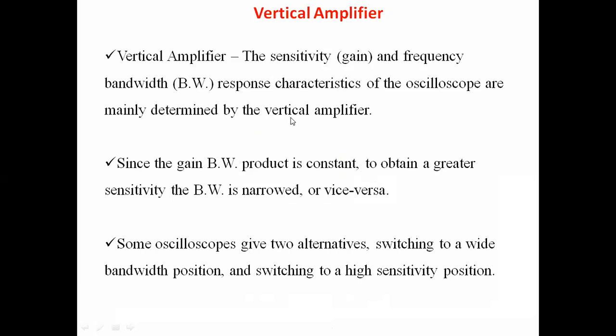The first one is the vertical amplifier. It is the first block in the oscilloscope. For this vertical amplifier, we give the input - the test signal, the measuring signal - whichever is required to measure voltage, frequency, or current. That is applied first to the vertical amplifier. We design the amplifier such that the product of sensitivity and bandwidth should be constant and should be of a higher value.